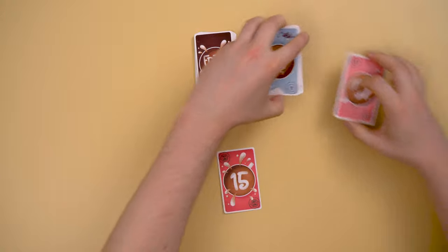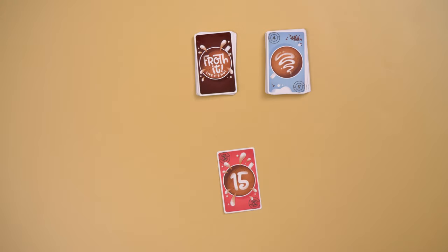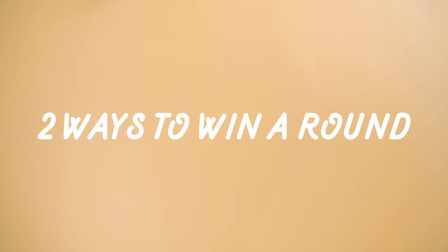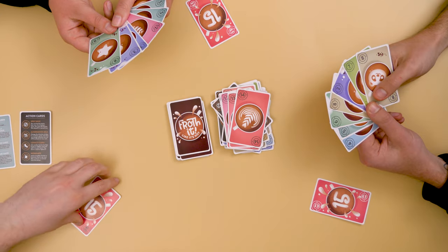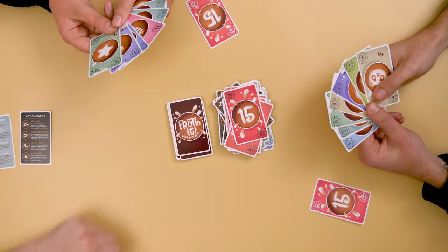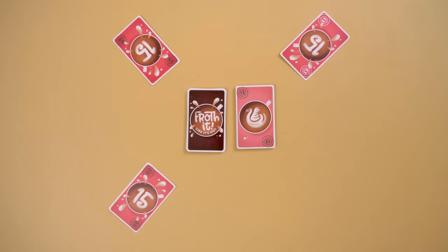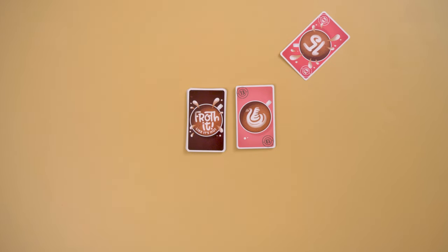If you are knocked out, place your cards face up at the bottom of the discard pile. There are two ways to win a round: number one, you are the first barista to play your number 15. Two, you are the last barista standing as everyone else has been knocked out.